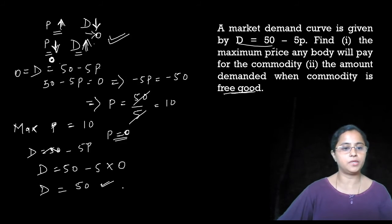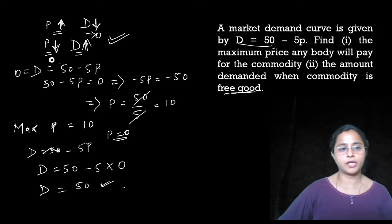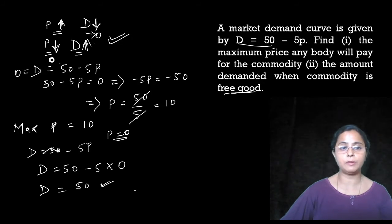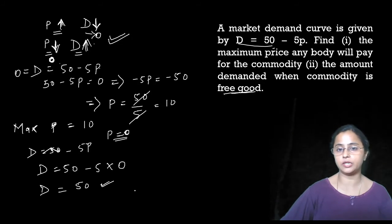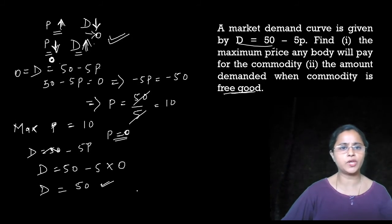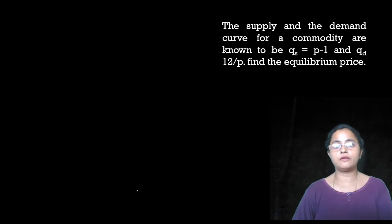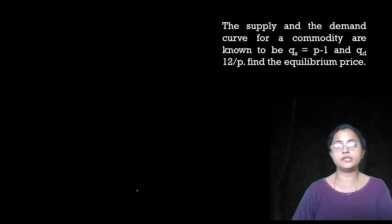Our demand will be 50 units when the commodity is free in the market. This was very easy to solve. Now let's take another question. The supply and demand curves for a commodity are known to be: quantity supplied Qs equals P minus 1, and quantity demanded Qd equals 12 upon P. Find the equilibrium price.